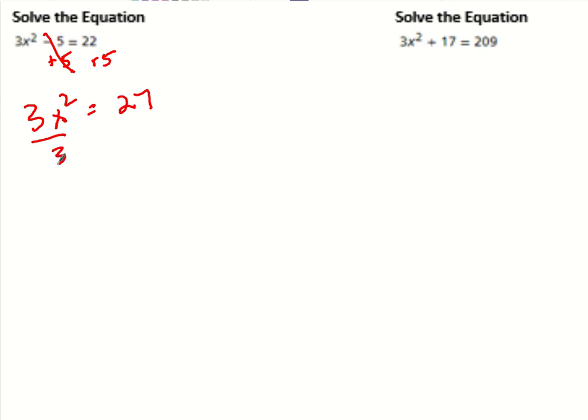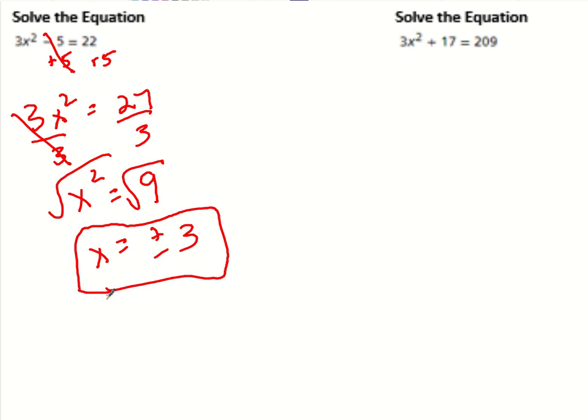I can just follow all my properties of equations by getting rid of the addition and subtraction first. Now I can divide by three. And then I can take the square root. So x equals positive or negative three. So without that x in the middle, we're able to pretty much solve it like this every time. But when we have that x in the middle, that's when this doesn't work out for us.